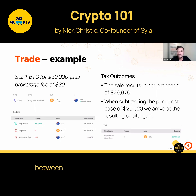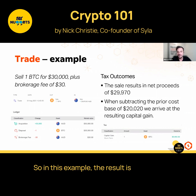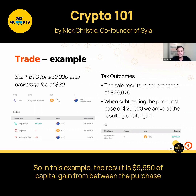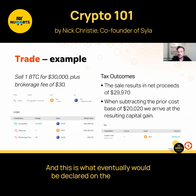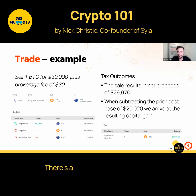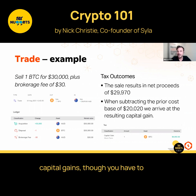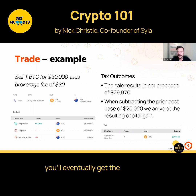The difference between the net proceeds and the cost base is the capital gain. In this example, the result is $9,950 of capital gain from the purchase and sale of this one unit of Bitcoin. This is what would eventually be declared on the tax return, though there are a few more steps — the client may have other sources of capital gains to add up and subtract before getting the final outcome.